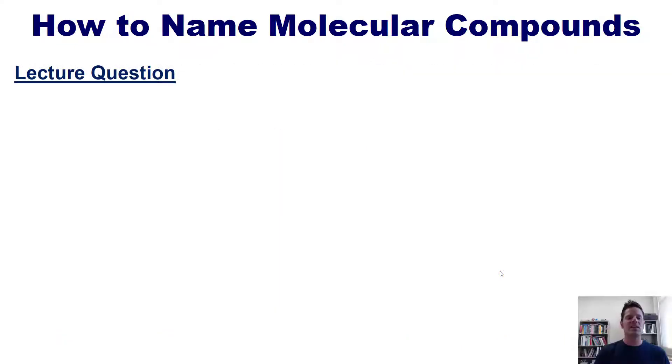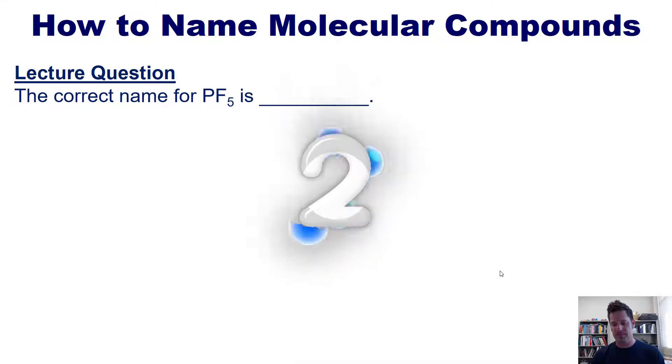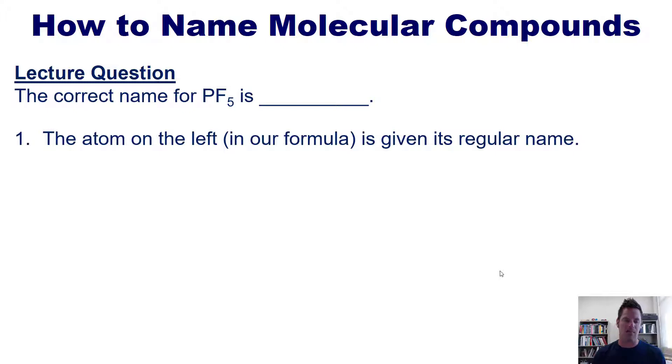All right, let's take a look at some examples. What is the correct name for PF5? To do this, we will follow our rules, beginning with rule one. The atom on the left in our formula is given its regular name. The letter P represents phosphorus on the periodic table, so we just write down the first half of our name as being phosphorus.